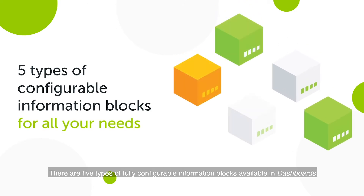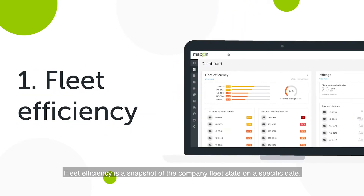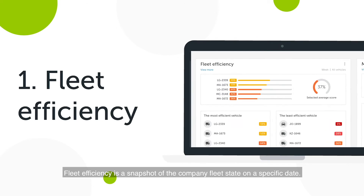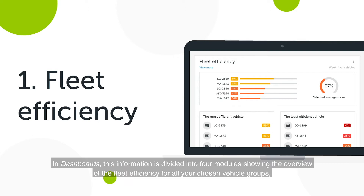There are five types of fully configurable information blocks available in Dashboards. Fleet Efficiency is a snapshot of the company fleet state on a specific date. In Dashboards,